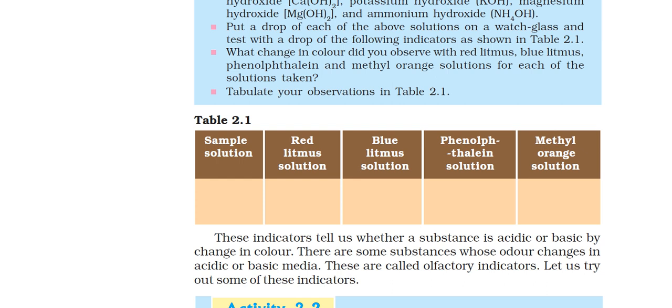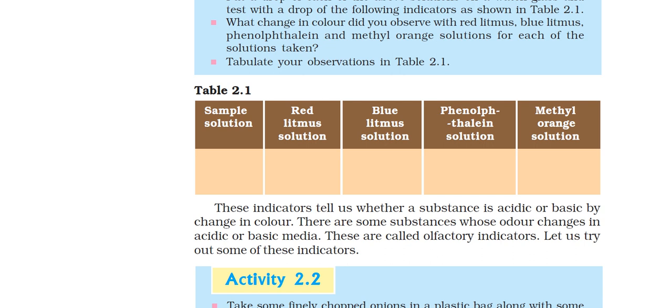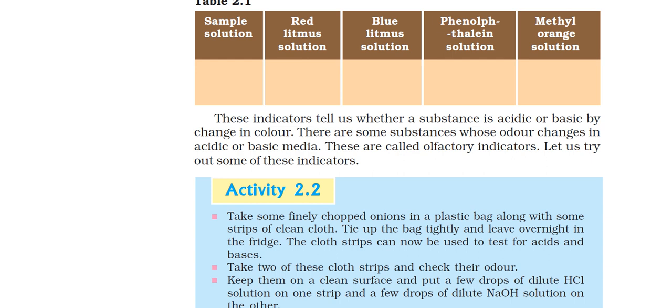What is the sample solution? Red litmus solution or red litmus paper? What will be the effect on blue litmus, phenolphthalein, and methyl orange? These indicators show that the substance is acidic or basic. When they show a change of color, you can find out that the particular substance is acidic or basic. Some substances change the odor in acidic or basic media and they are called olfactory indicators.